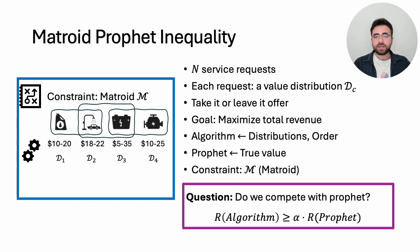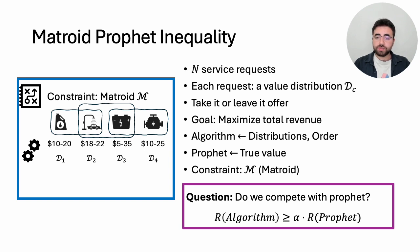A well-known extension fitting this model is the matroid prophet inequality. In the matroid prophet inequality, the feasible subsets are independent sets of a matroid. I will omit the formal definition of matroid; in simple terms, a matroid is a downward closed set system with an exchange property.